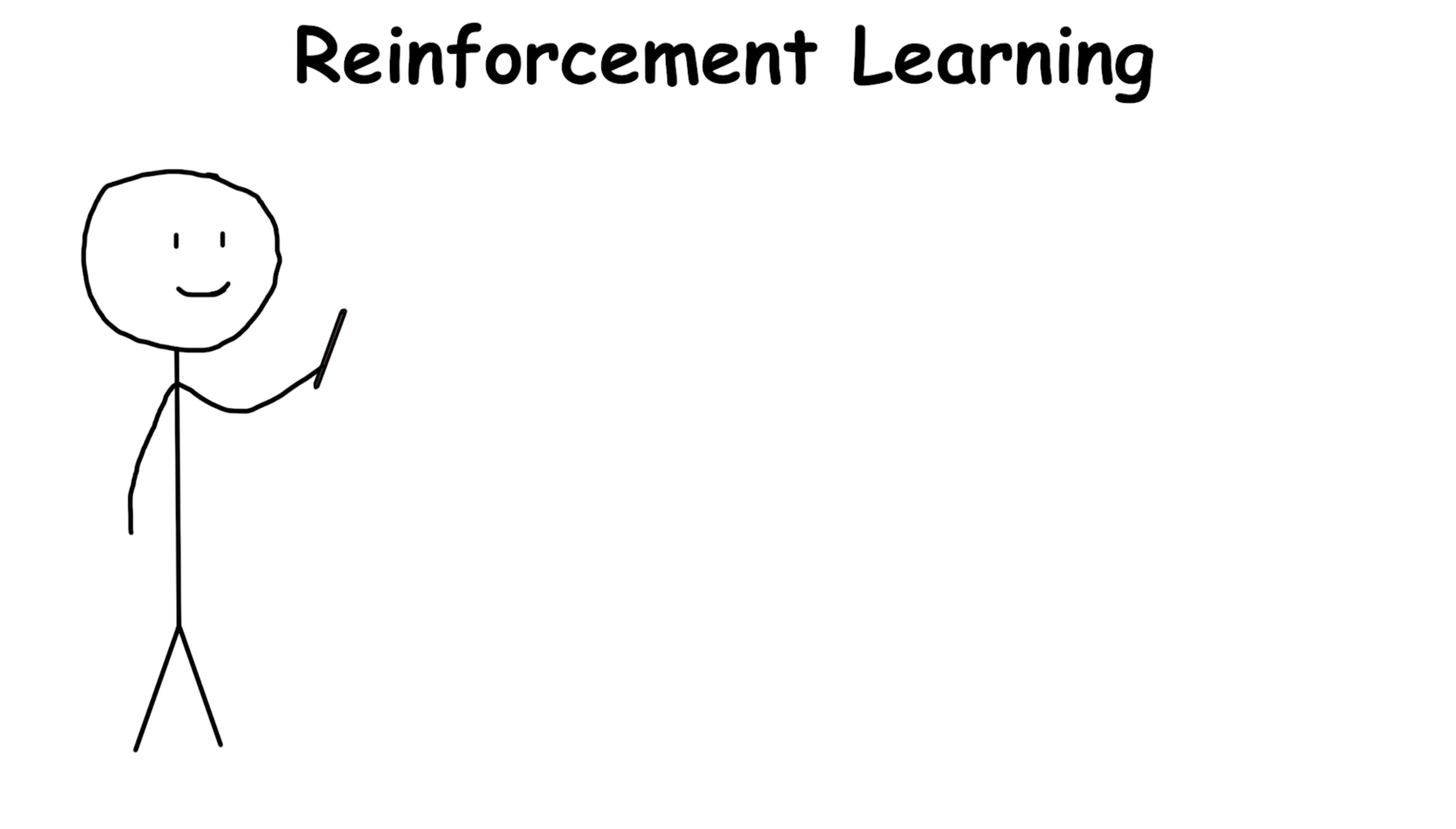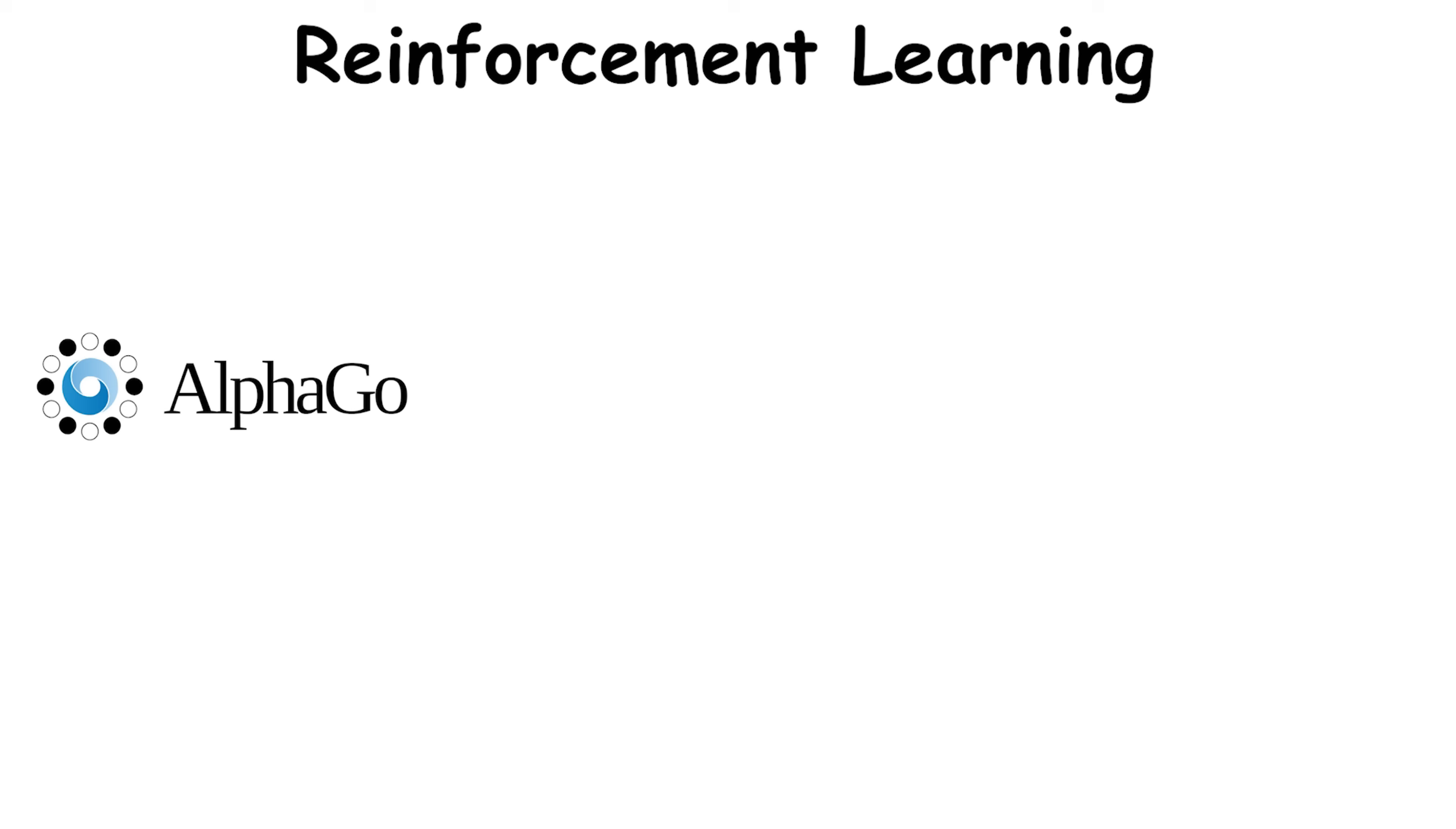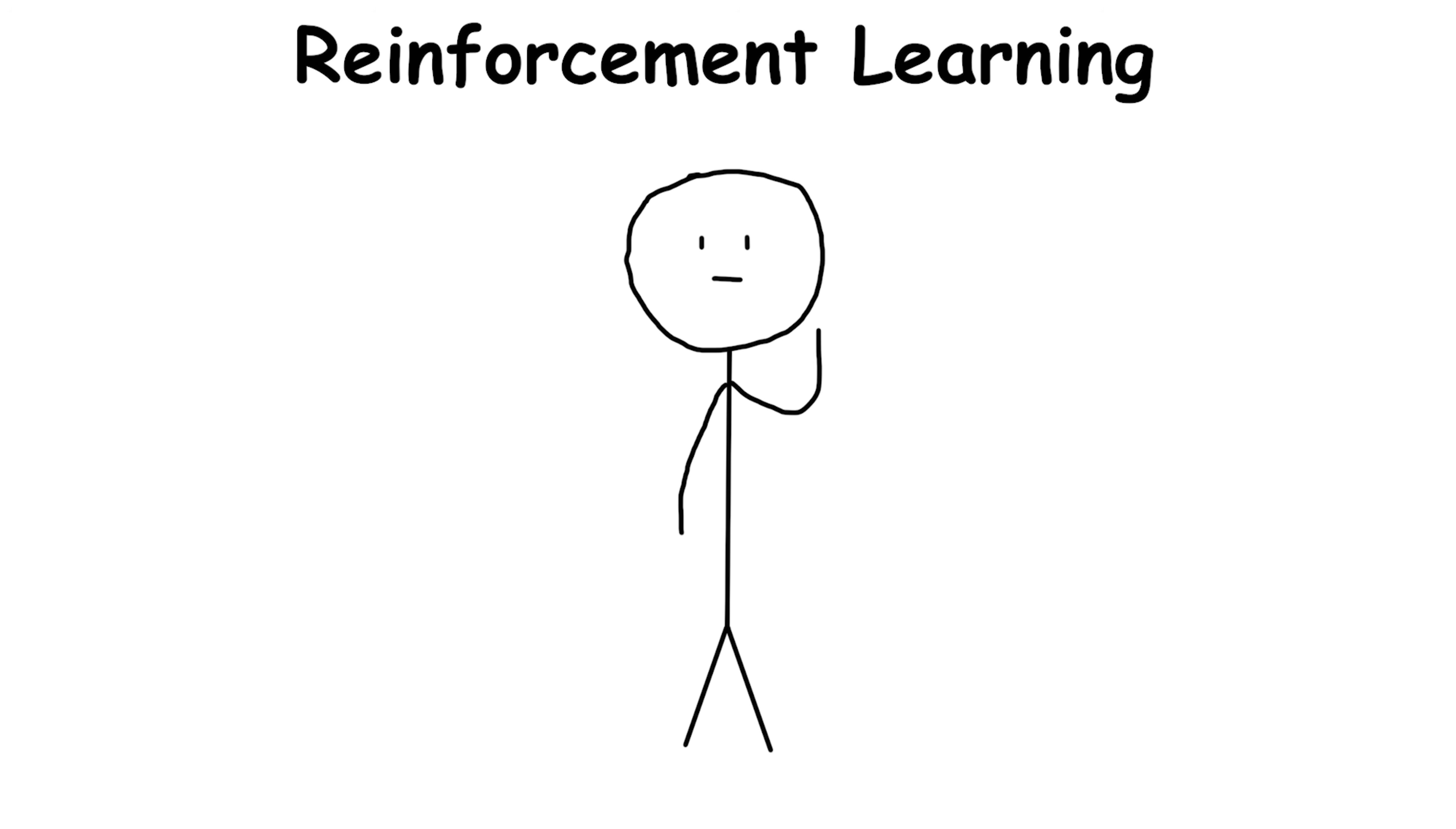Reinforcement Learning is when an AI learns by trial and error, taking actions in an environment, receiving feedback, and adjusting to maximize rewards over time. AlphaGo mastered the ancient game of Go by playing millions of games against itself, refining strategies with every win or loss until it outperformed human champions. But it's not just games.